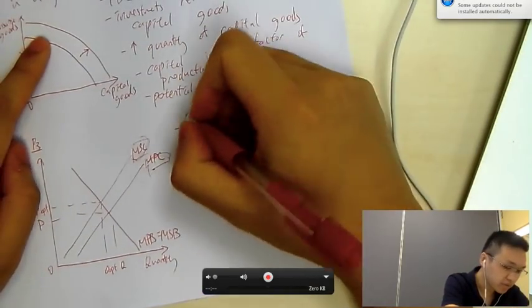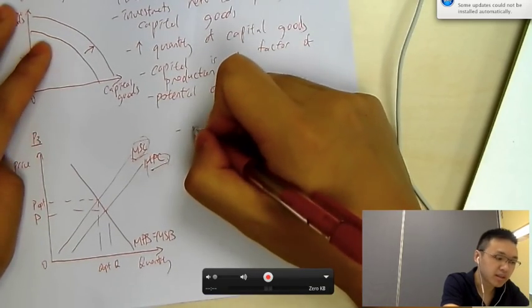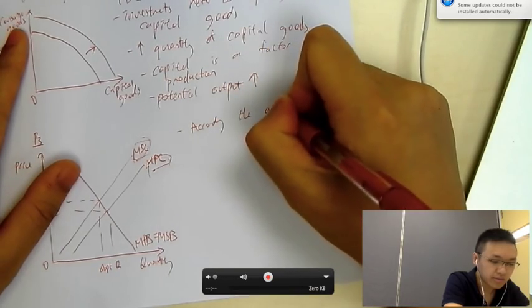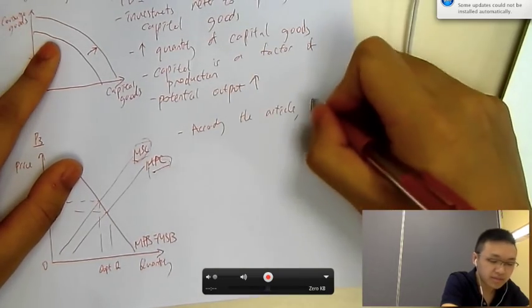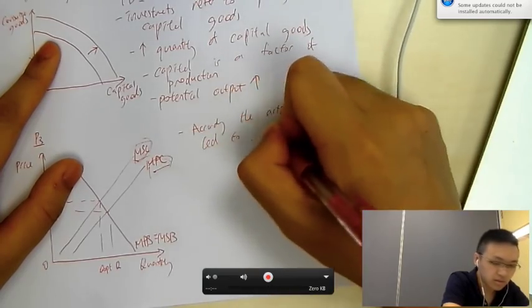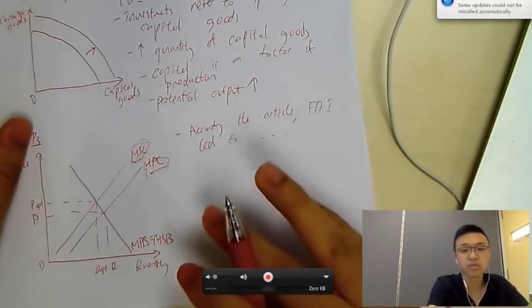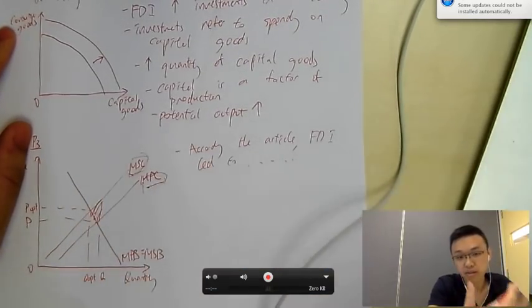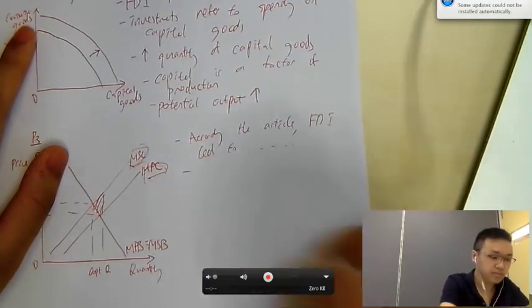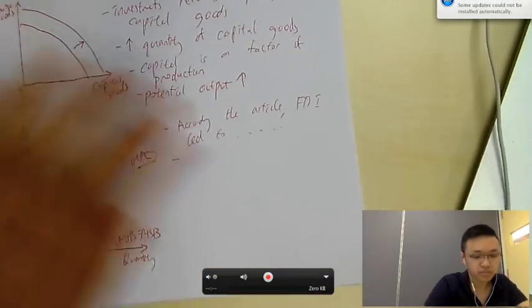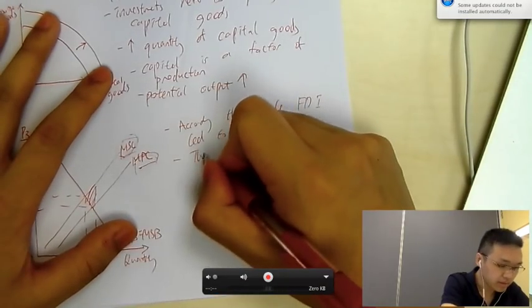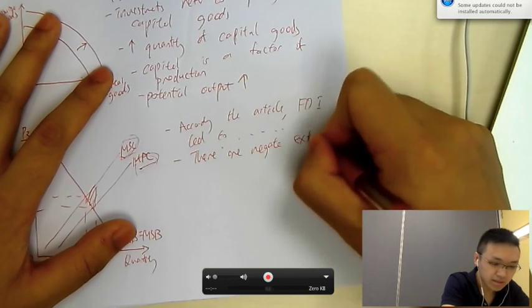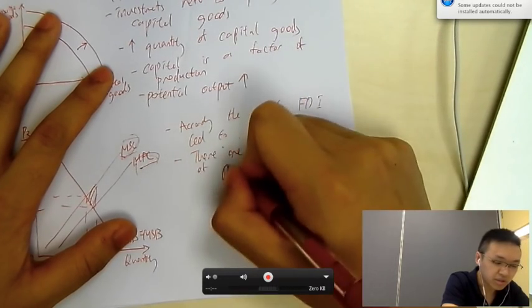So, what do we say here? So, first of all, you can say, just say something like this. According to the article, FDI led to... And then, you talk about all the negative consequences that the FDI has led to, right? So, for example, damaging health, that sort of thing. So, you can say, there are negative externalities of production, right?